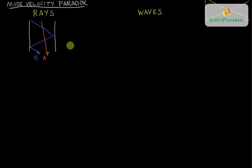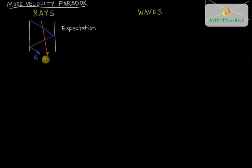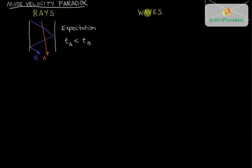If you asked which one of these rays is going to get out of the waveguide first, given the waveguide has some total length L, we would form the expectation that beam A would get out first. Another way to express that is to say that the time T_A for beam A to travel inside the waveguide would be less than time T_B for the same length of waveguide.